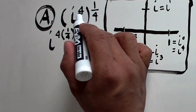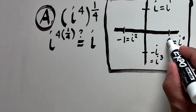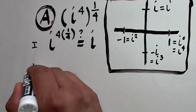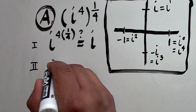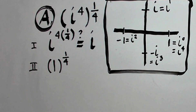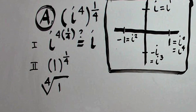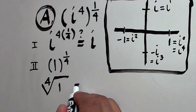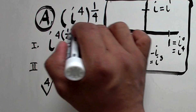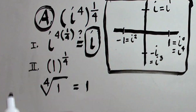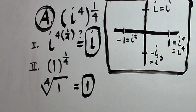Now, what if we simplify the expression inside the parenthesis first? Notice that i to the fourth equals 1, so the expression becomes 1 raised to one fourth, which we can write as the fourth root of 1. In the set of real numbers, the fourth root of 1 equals 1. We have a problem: the first analysis gives i, and the second gives 1 for the same expression.